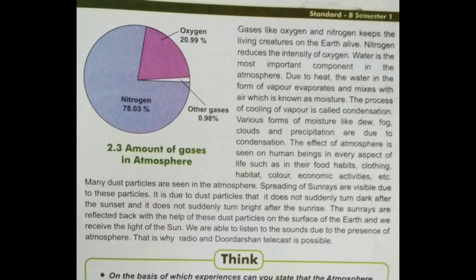Many dust particles are seen in the atmosphere. These are small particles. The spreading of sun rays is visible due to these particles. It is due to dust particles that it does not suddenly turn dark after sunset and does not suddenly turn bright after sunrise.